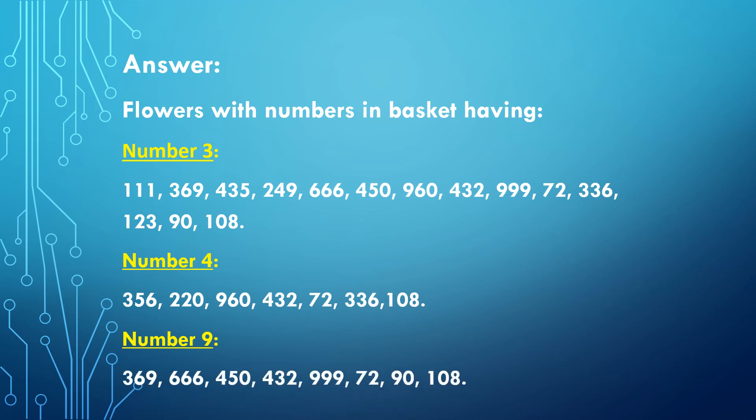Flowers in the basket having number 9: 369, 666, 450, 432, 999, 72, 90, 108. To check divisibility by 9, you add the digits. For example, 108: 1 plus 0 plus 8 equals 9, and 9 is divisible by 9. Therefore, the entire number 108 is divisible by 9. Children, I hope you have understood the test of divisibility — you can check it for any number. Thank you.